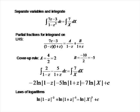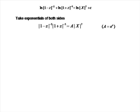Taking exponentials of both sides, we get |1 minus Z|^(minus 2) times |1 plus Z|^(minus 5) equals a constant A times |X|^7, where A equals e^C. Since C is a constant, the exponential of a constant is also a constant. We then remember that Z equals Y/X and substitute in, ending up with terms involving 1 minus Y/X and 1 plus Y/X.